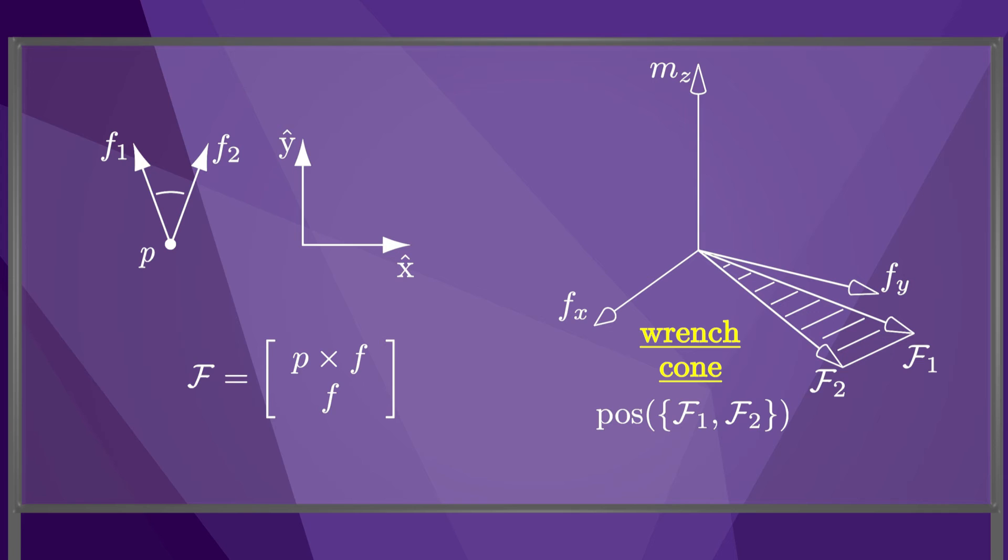The planar friction cone can be plotted as a wrench cone in the three-dimensional wrench space. The wrench cone is the positive span of the wrenches from the friction cone edges. The linear components of the wrench cone edges are mostly in the Fy direction, and the moments about the z-axis are negative.